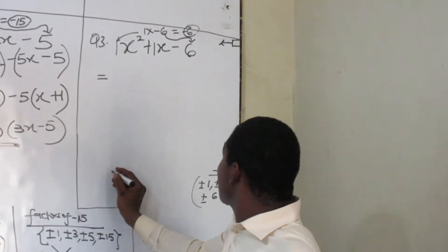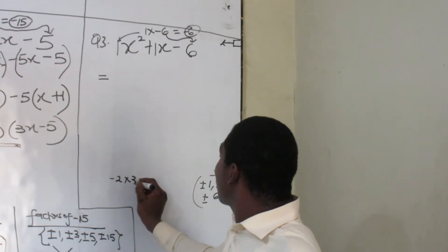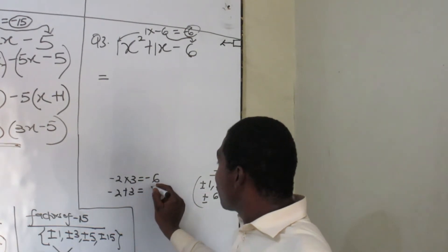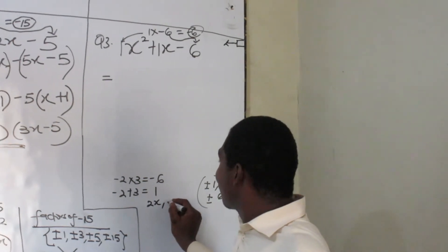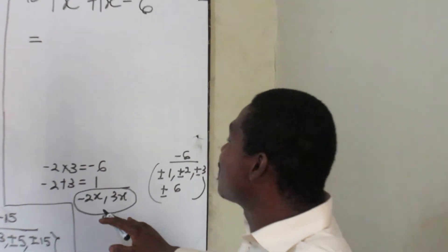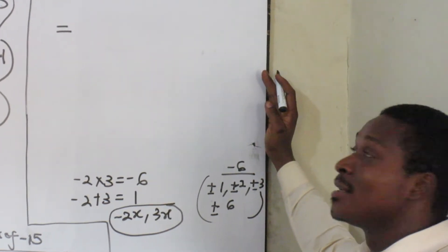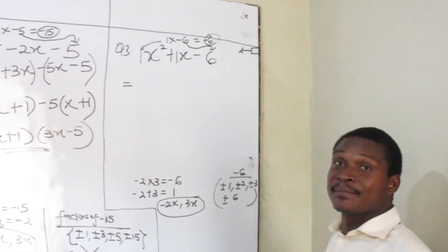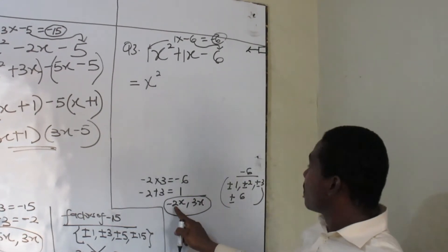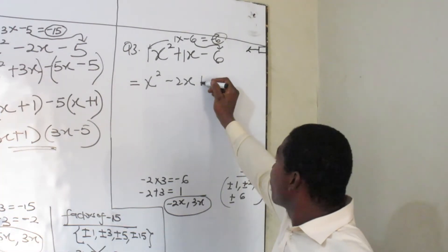So we can try these numbers. Minus 2 times 3 — that will give you minus 6. That's wonderful. Let's add them the same way and see — adding gives positive 1. The factors are working. So these are the factors to be used. Anytime I test my factors, I chip them in. Now let's chip them in. So you have x squared, minus 2x, plus 3x.